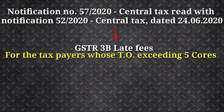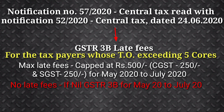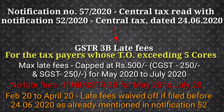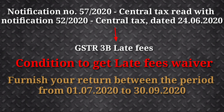For taxpayers whose aggregate turnover is more than 5 crores, the maximum late fee for GSTR 3B from May 2020 to July 2020 is capped at 500 rupees including CGST and SGST. No late fees for Nil GSTR 3B from May 2020 to July 2020. For February 2020 to April 2020, late fees are waived off if filed on or before 24th June, as notified in Notification 52, provided the returns are filed between 1st July 2020 and 30th September 2020.